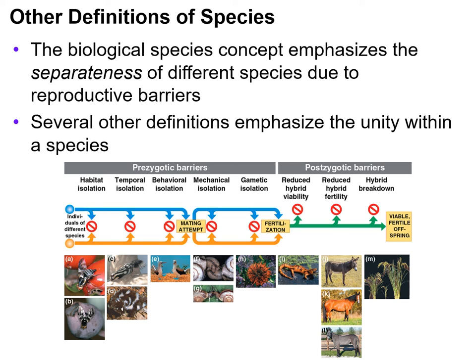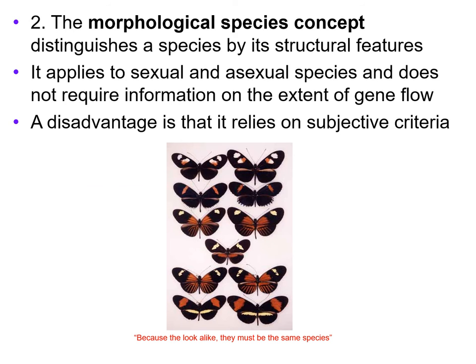We have other definitions of species. The biological species concept emphasizes the separateness of different species due to reproductive barriers. The second species concept is the morphological species concept, which distinguishes a species by its structural features — its shape. It applies to sexual and asexual species and does not require information on the extent of gene flow. A disadvantage is that it relies on subjective criteria such as shape — for example, because these butterflies look alike, they must be the same species. That is subjective.